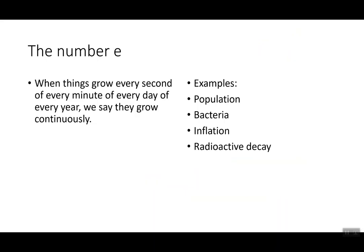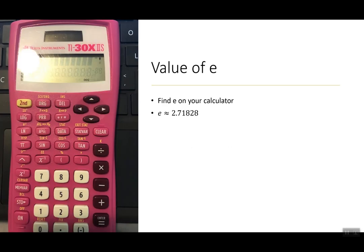For some examples I need to introduce a new number called e. It's used for things that grow or decay every second of every minute of every day — we call this continuous growth or continuous decay. Examples include population, bacteria, inflation, and radioactive decay. The value of e is approximately 2.71828.